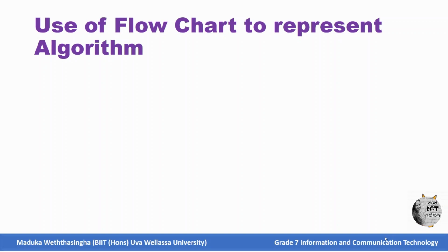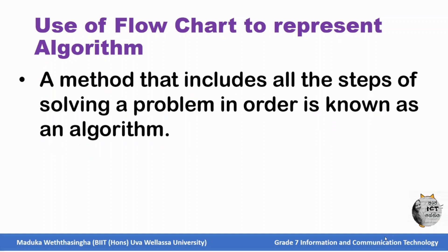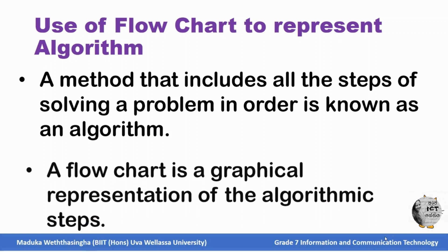I think the words flowcharts and algorithm are very familiar to you, because in grade 6 you learned about algorithm and flowchart. So in grade 7 you just have to recall what you learned last year. A method that includes all the steps of solving a problem in order is known as an algorithm. A flowchart is a graphical representation of algorithmic steps.